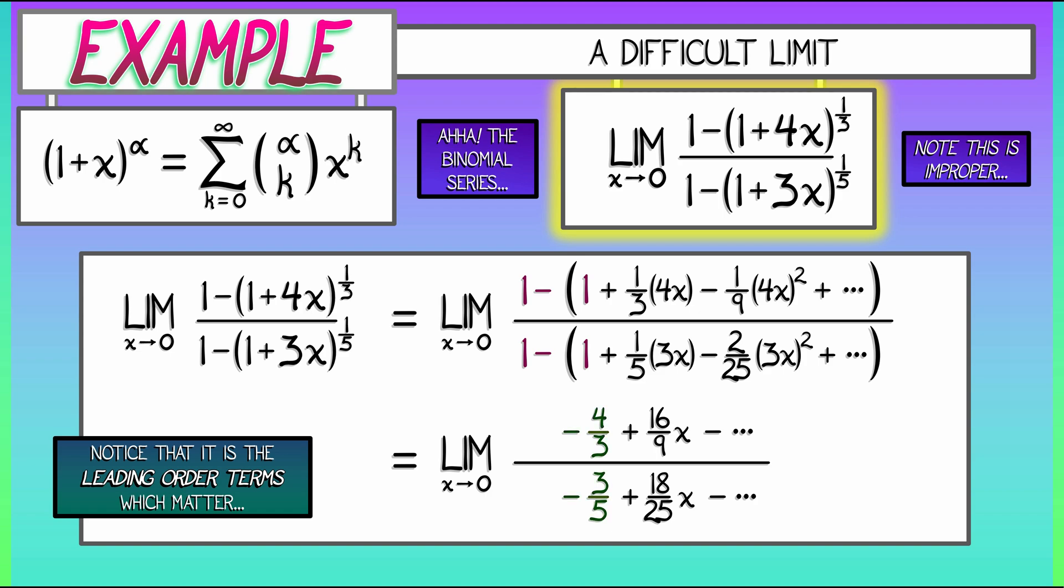So, this limit evaluates to negative four-thirds divided by negative three-fifths. That is twenty-ninths.